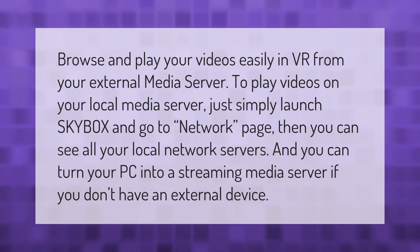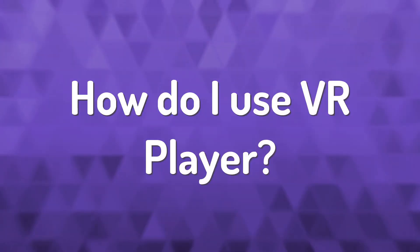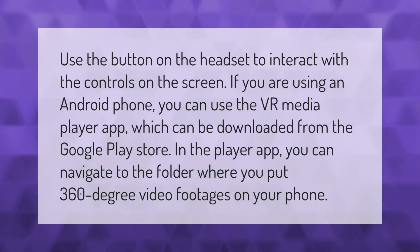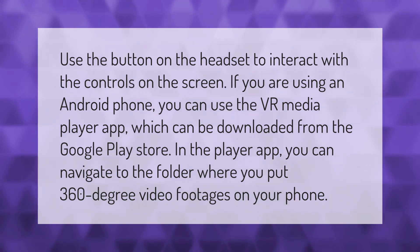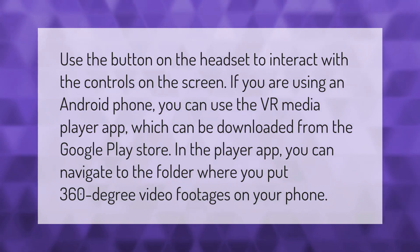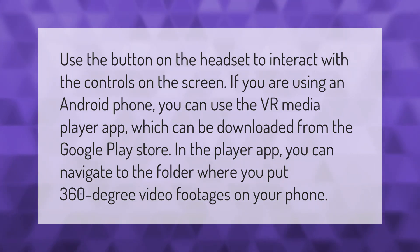Use the button on the headset to interact with the controls on the screen. If you are using an Android phone, you can use the VR Media Player app, which can be downloaded from the Google Play Store. In the player app, you can navigate to the folder where you put 360-degree video footage on your phone.